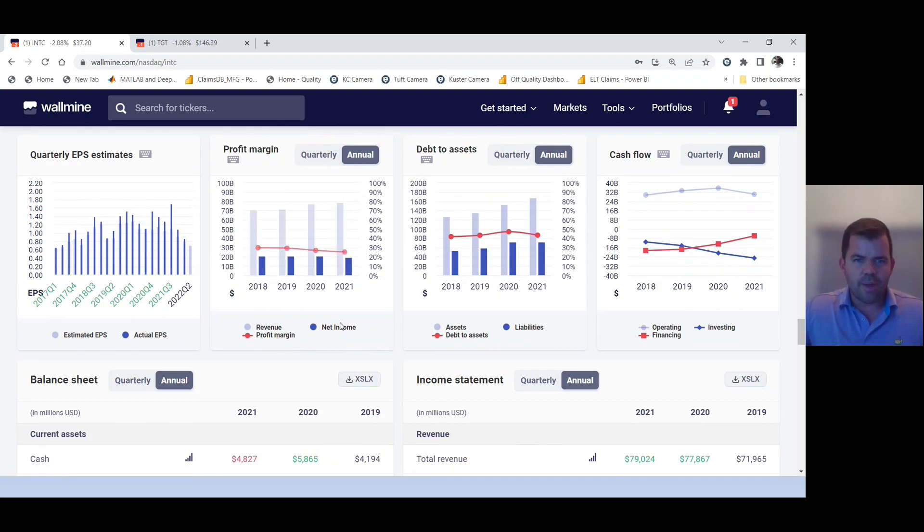And I'm looking at revenue, income, and profit margin. Really, that income is what I'm looking at. So in 2021, their net income was $19.86 billion. 2020, they're at $20.9 billion.